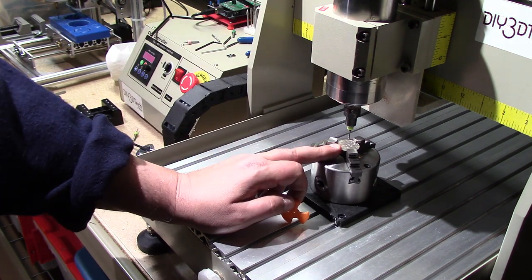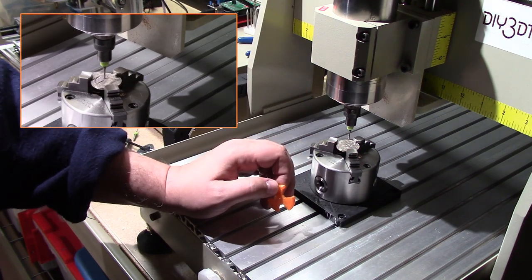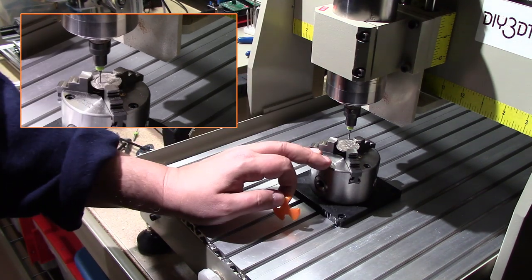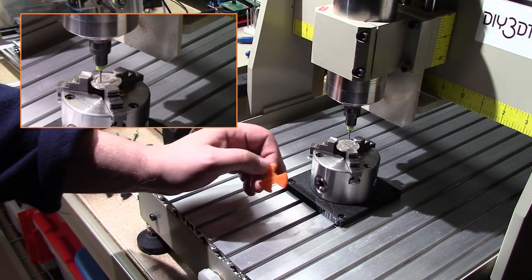This is actually a half a ringgit coin from Malaysia that I'm going to cut a peace sign into on the CNC. So this is one of the things I really love doing, coin art on the CNC. It does an excellent job.